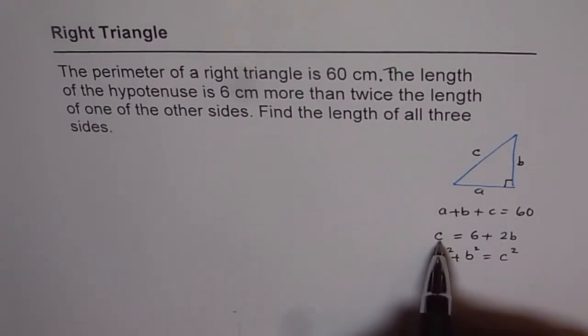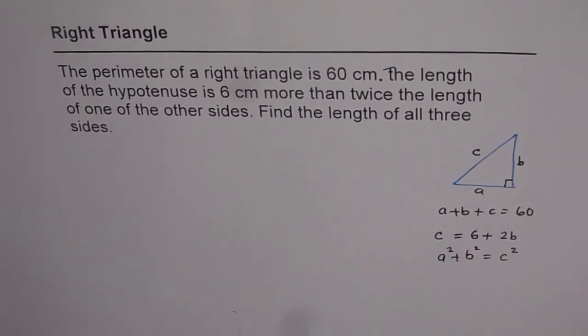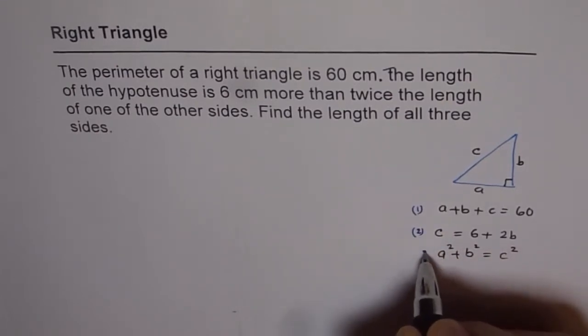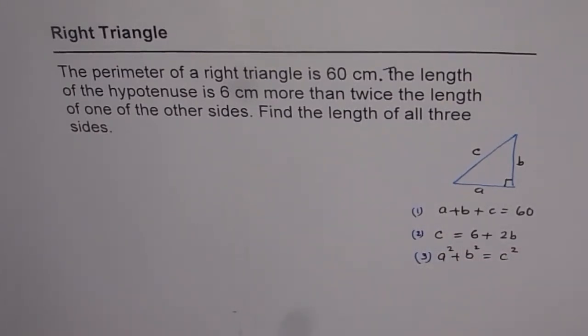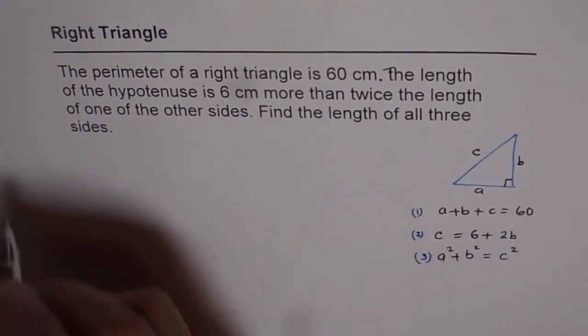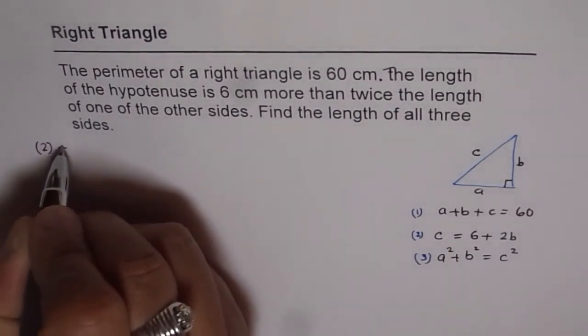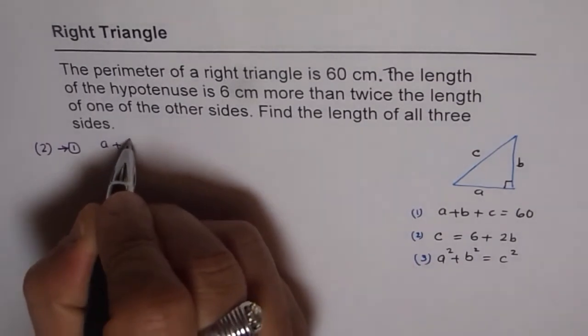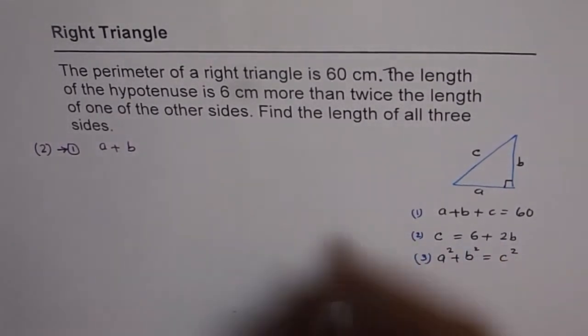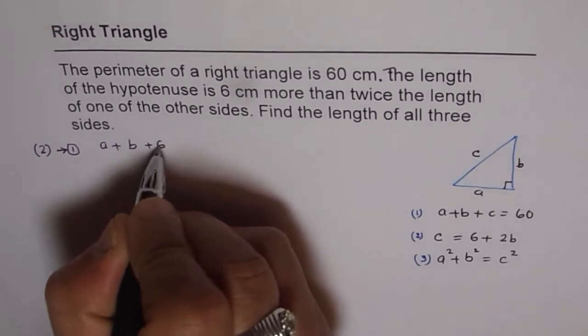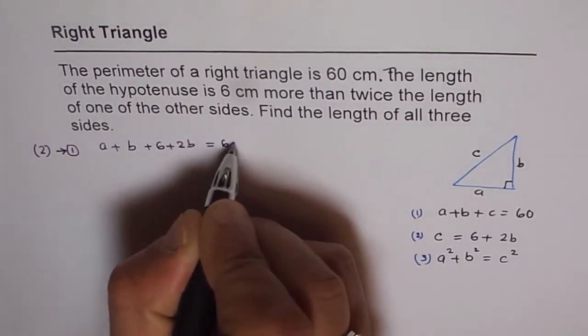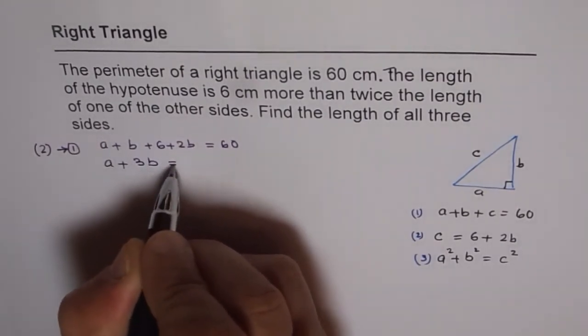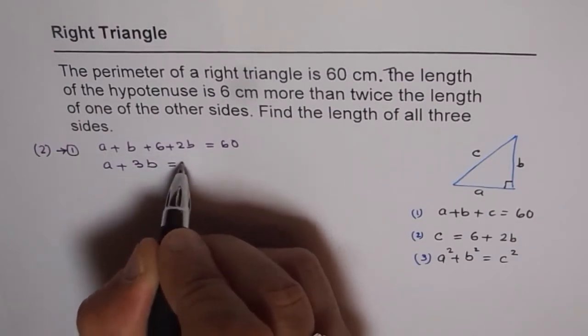First step is substitute c into these equations. Let's number the equations 1, 2 and 3. Now let us substitute the value of c from 2 to 1. So we have a plus b and instead of c I am writing 6 plus 2b equals 60.